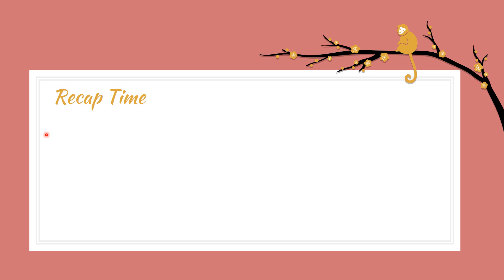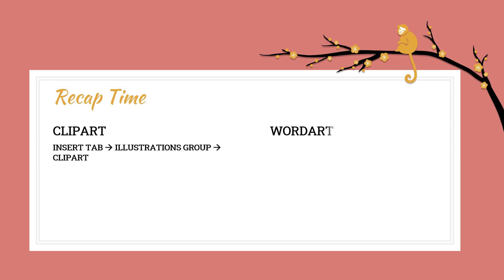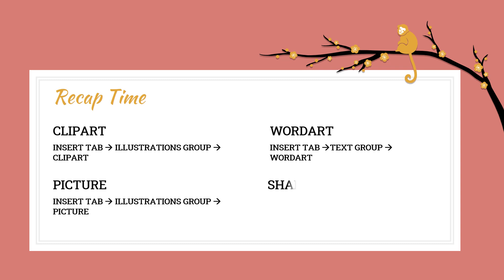The first object was Clip Art — the command is Insert tab, Illustrations group, Clip Art option. The second is Word Art — Insert tab, Text group, Word Art option. The third is Picture — Insert tab, Illustrations group, Picture option. The fourth is Shapes — Insert tab, Illustrations group, Shapes option. Note that all four options are present under the Insert tab.